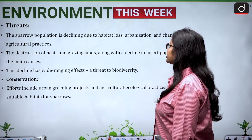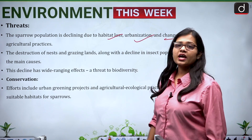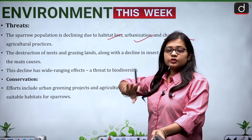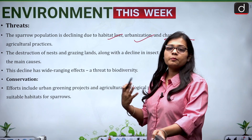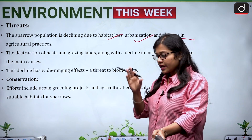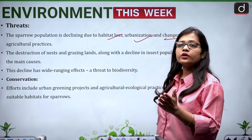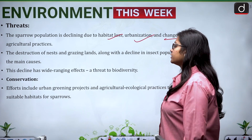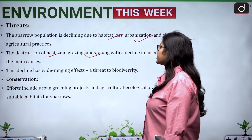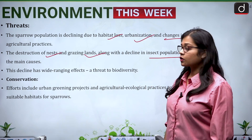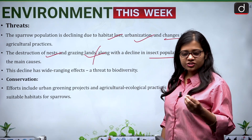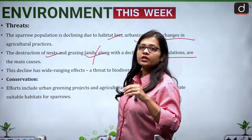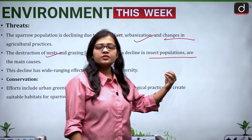The sparrow population is declining due to habitat loss, urbanization, and changes in agricultural practices. The use of fertilizers, pesticides, and urea in modern agriculture is not going well with the habitat of sparrows, causing their numbers to slowly decline. Destruction of nests and grazing lands, along with the decline in insect populations, are also main causes.